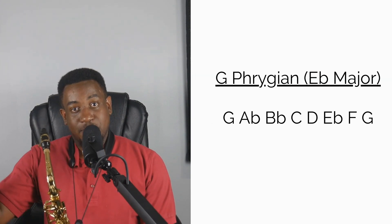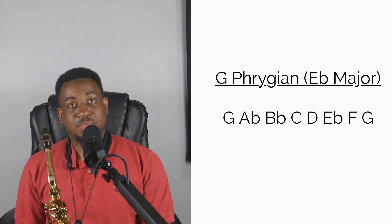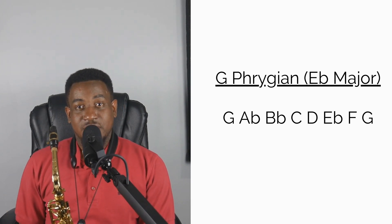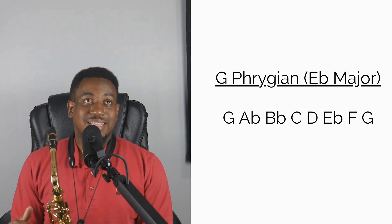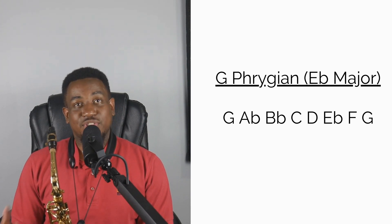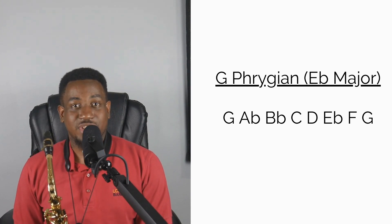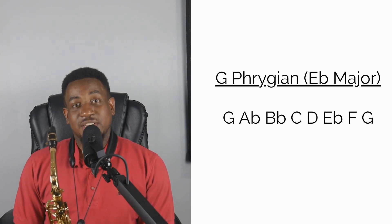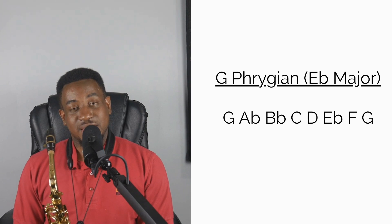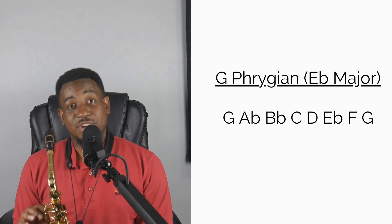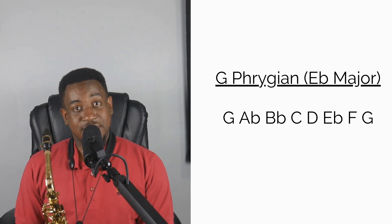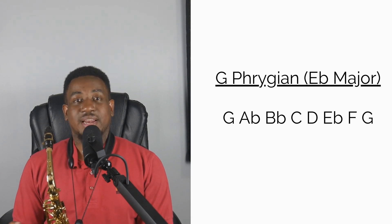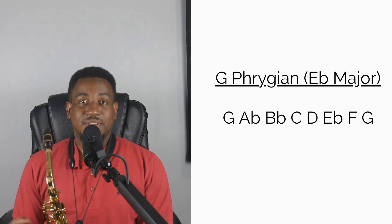The next mode is G Phrygian. G is the third scale degree of Eb, so G Phrygian sounds like this. The notes are G Ab Bb C D Eb F G.